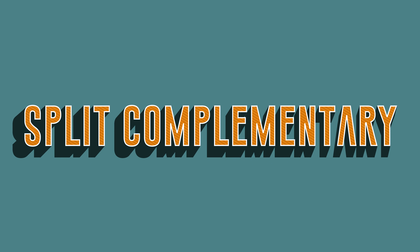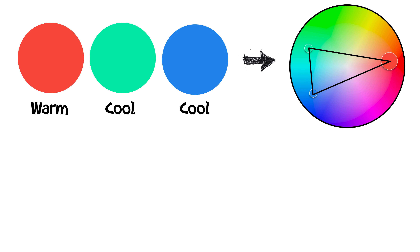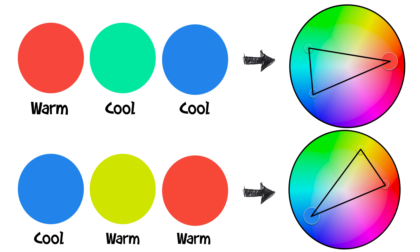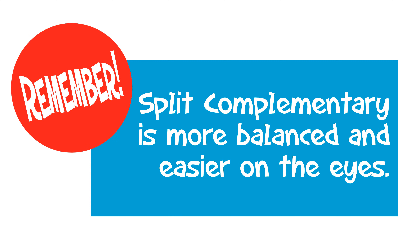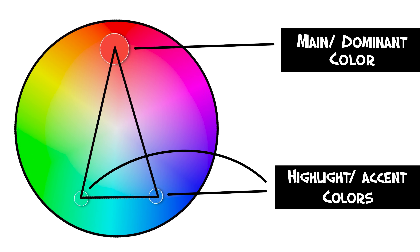Similar to this is split complementary. Split complementary schemes use a base color and then two secondary colors placed symmetrically on the color wheel, forming a narrow triangle. This gives you one warm color and two cool colors, or vice versa. Unlike complementary color, split complementary schemes are more balanced and easier on the eyes. Usually you want the color at the top of the triangle to be the main color, with the two secondary colors working as highlights and accents.